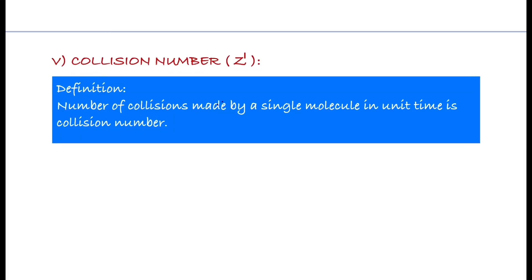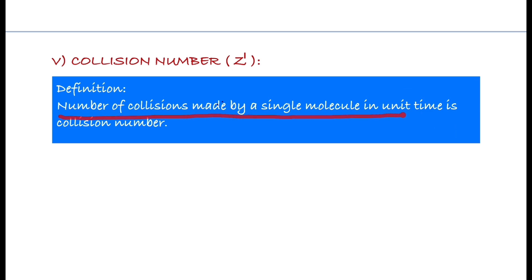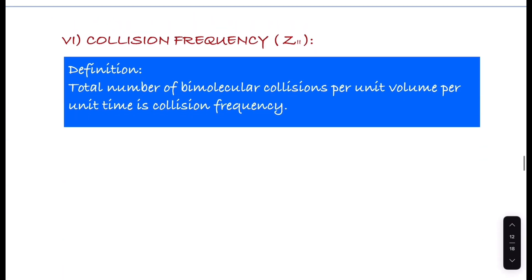In this video we'll discuss some more definitions of collision parameters. The first is collision number, also indicated by Z prime. The collision number is the number of collisions made by a single molecule in unit time. So in unit time, one gas molecule is performing how many collisions — that count is called the collision number.